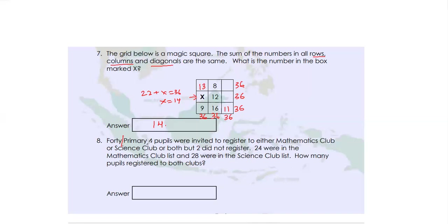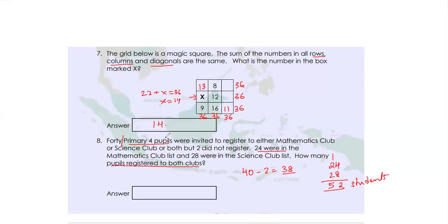Question number 8. There were 40 grade four students invited to register for either a mathematics club or science club or both, but two did not register. So total students who registered were 38. 24 were in the mathematics club and 28 were in the science club. Adding those gives 52 — but wait, we had only 38 registered students. Subtracting: 52 minus 38 = 14. So there were 14 students who registered in both clubs. My answer is 14.